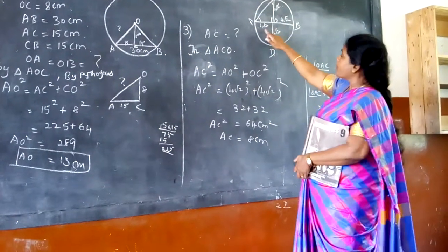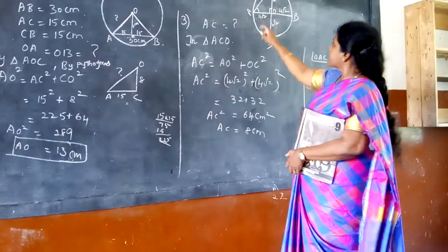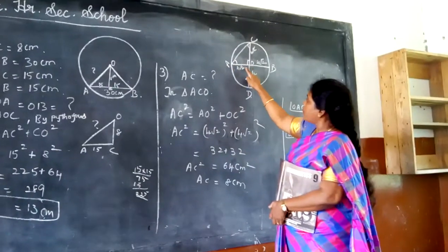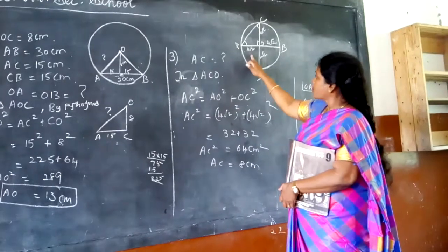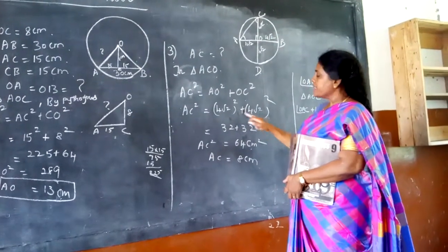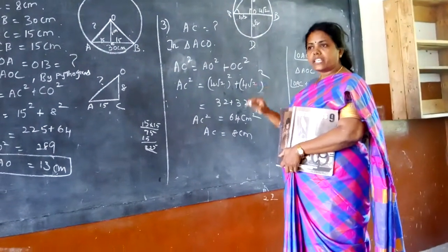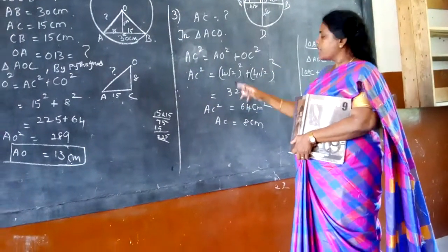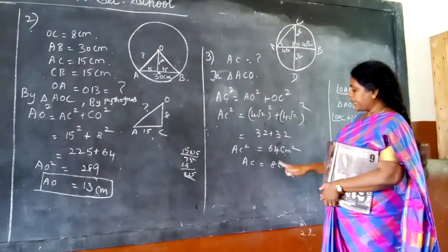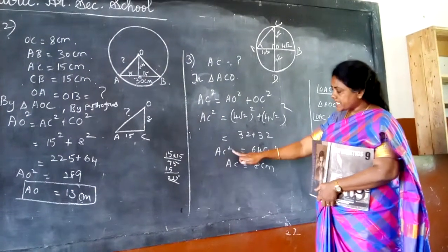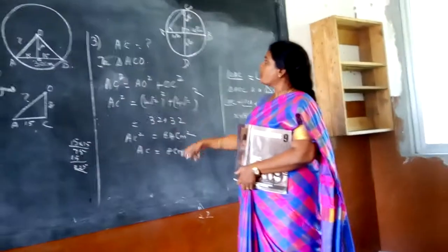Now we are going to find the value of AC. By Pythagoras theorem: AC² = AO² + OC². AO is 4√2 and OC is also 4√2. Squaring each: (4√2)² = 16 × 2 = 32. So AC² = 32 + 32 = 64, and therefore AC = √64 = 8 cm. I have found out the value for this part of the question.